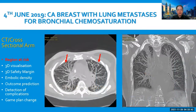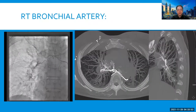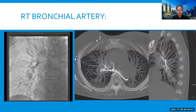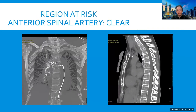In this patient with CA breast and bilateral lung metastasis, she was referred for bronchial chemo-saturation for salvage therapy. The region at risk is the anterior spinal artery. The microcatheter in the right bronchial artery and CT right bronchial arteriogram shows denser opacification in the right tracheobronchial system. On the sagittal reconstruction, the anterior spinal artery was not seen, and we are clear to proceed.